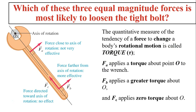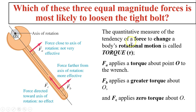So which of the three equal magnitude forces is most likely to loosen the tight bolt? You have three forces: F-A, F-B, and F-C. F-A will act on the axis of rotation, but it's not very effective. F-B, a force further from the axis of rotation, would be more effective. On the other hand, force C is directed toward the axis of rotation — you can't turn it at all.